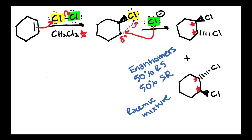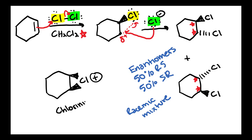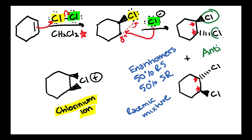Just as a reminder: on an exam, the way that the intermediate might show up is going to be as a chlorinium ion, which is going to look like this with a full positive on the chlorine. Before we called it a brominium ion because we were dealing with a bromine atom — in this case, we're going to be talking about the chlorinium ion as our cyclic intermediate. Remember that little triangular look, and because of that cyclic intermediate, that is the reason that we have anti-stereochemistry — one chlorine adding on a wedge and the other one on a dash. Anytime you have a cyclic intermediate, you are going to have anti-stereochemistry.